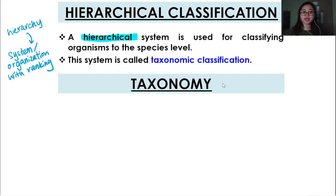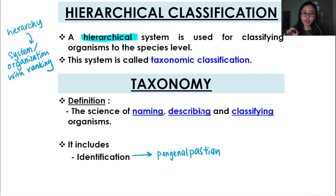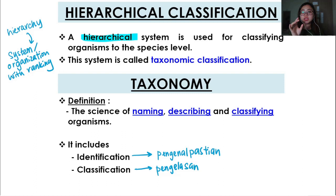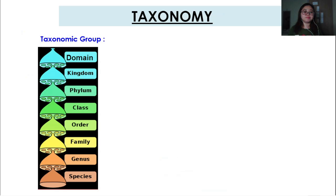Now that brings us to the word taxonomy. The definition of taxonomy is the science of naming, describing, and classifying organisms. That means when we are doing anything relating to taxonomy, we are actually including these three things: identification of something, classification of things, and nomenclature or naming. Lepas kita kenal pasti apa itu, kita pisah dia kepada kumpulan dan kemudian kita bagi dia nama yang khas.